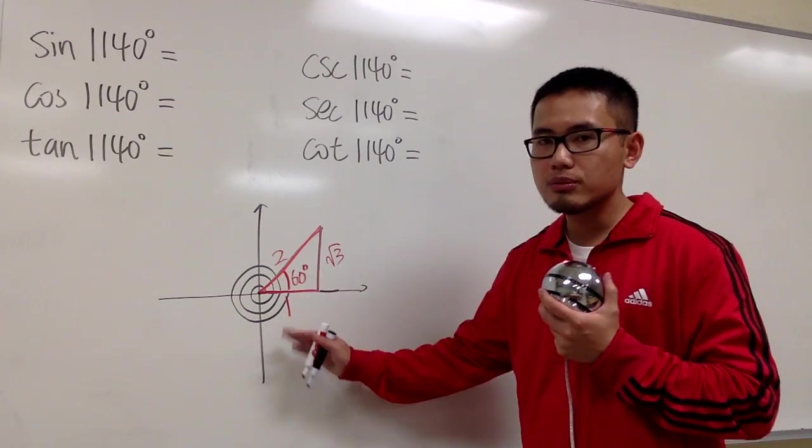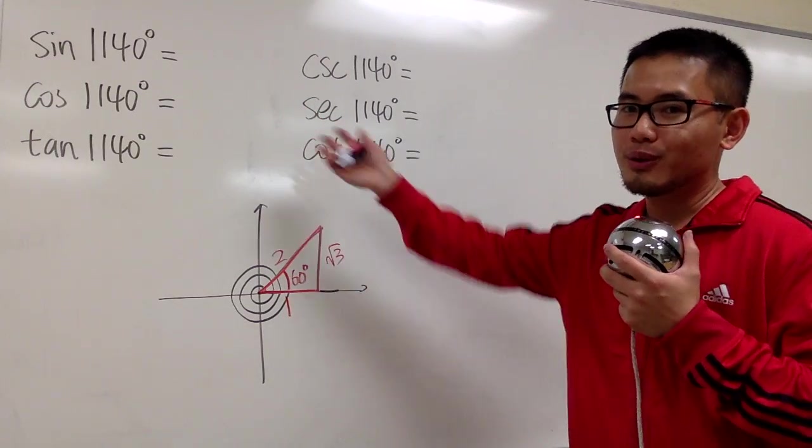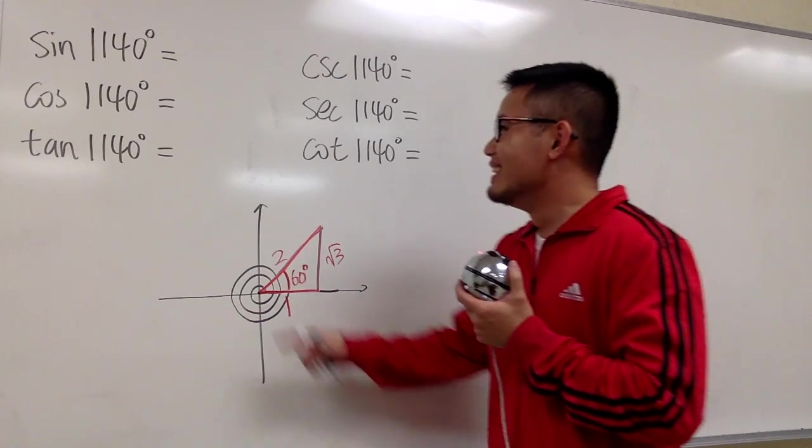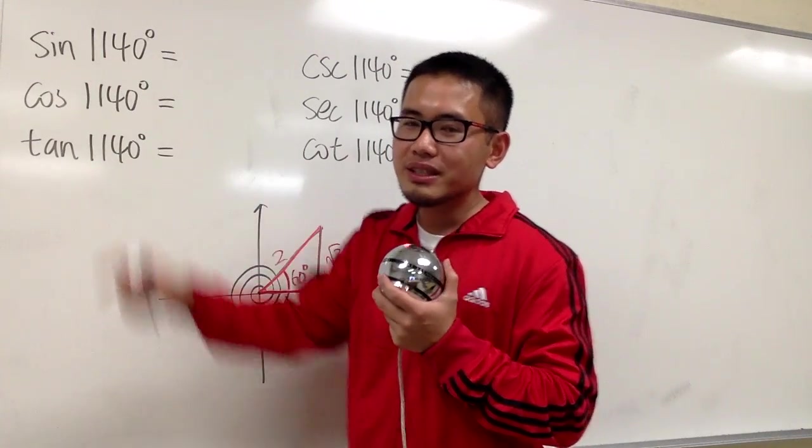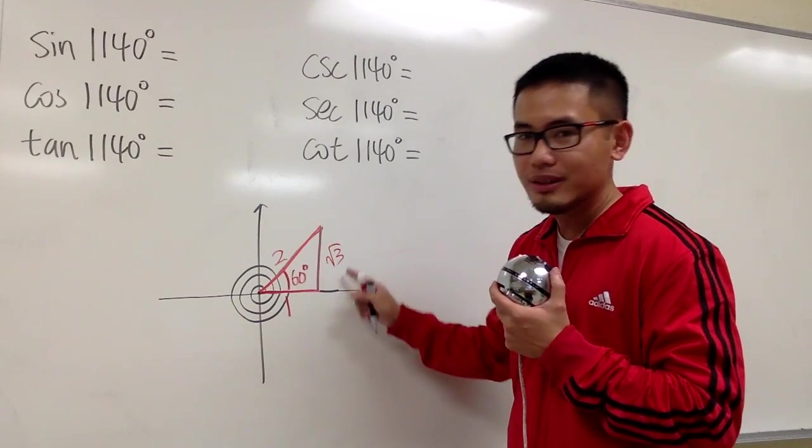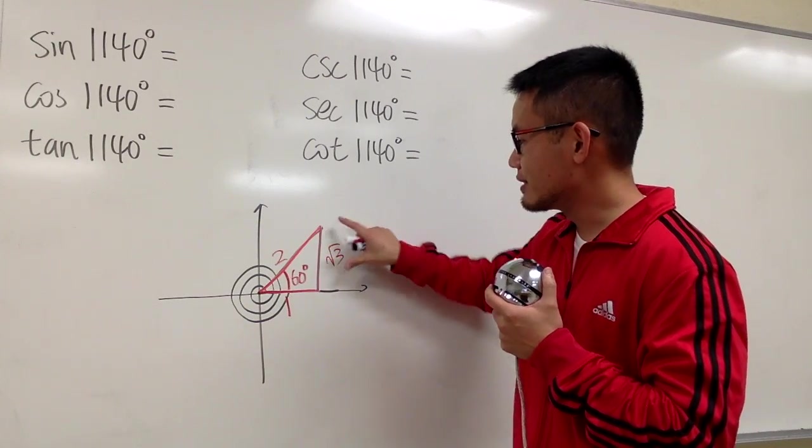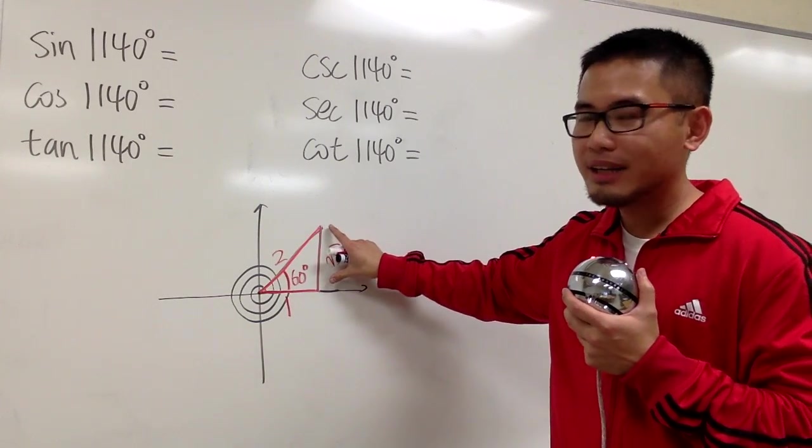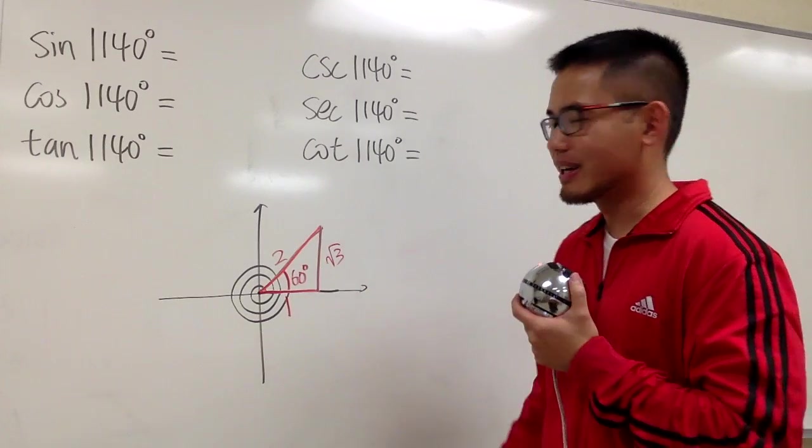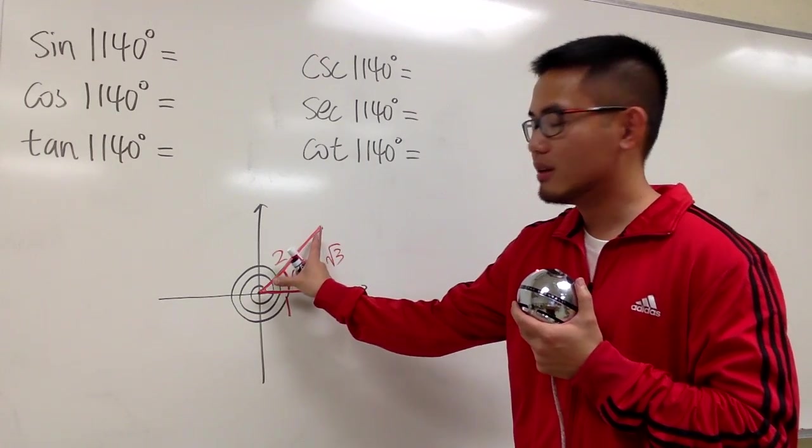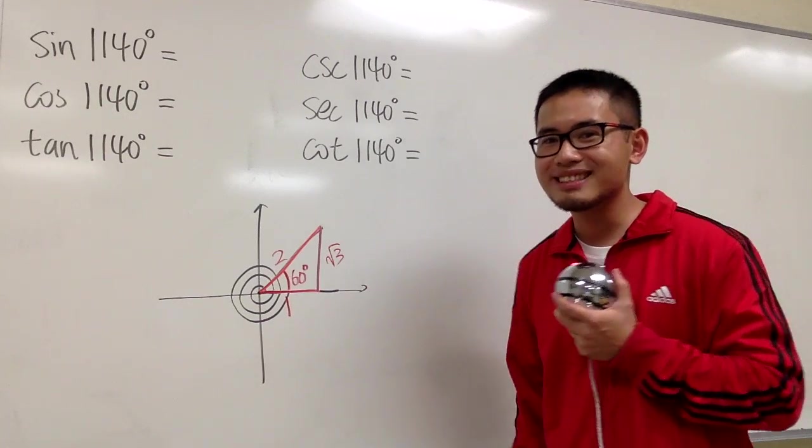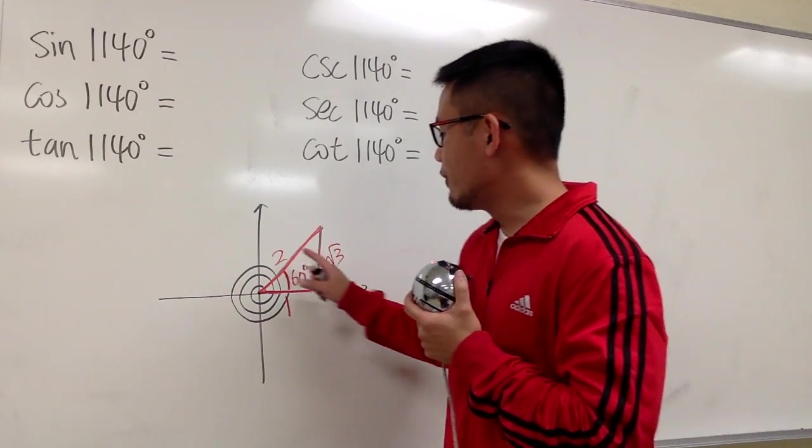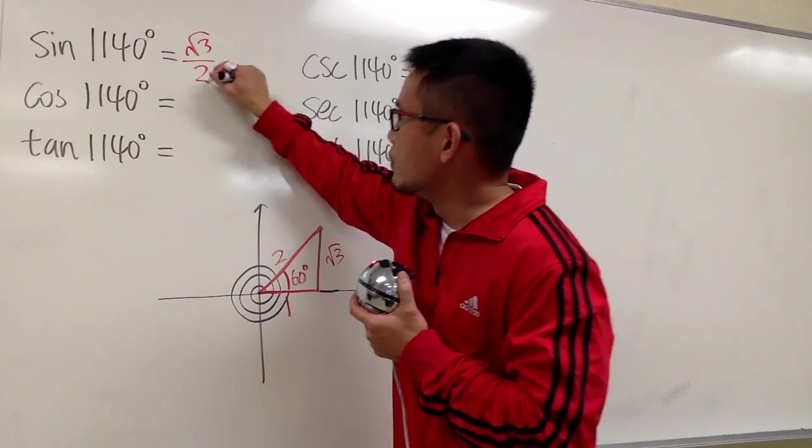And once you have this picture, you can just go ahead and fill all that in, right? So, sine of 1140 degrees. In fact, it's the same as this. And you do the usual business. You can look at this as y over r, okay? Opposite over hypotenuse. But use y over r, because you are talking about the xy plane. Anyways, y over r, which is square root of 3 over 2.